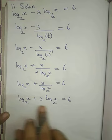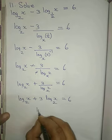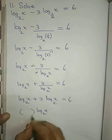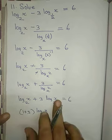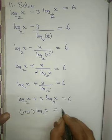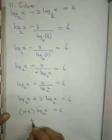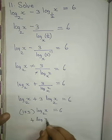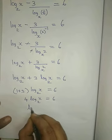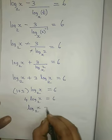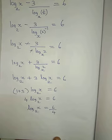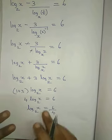Now I can take log x to the base 2 as a common factor. In the bracket I write 1 plus 3, giving 4 log x to the base 2 equal to 6. Dividing both sides by 4, 6 by 4 reduces by 2 to give 3 by 2.